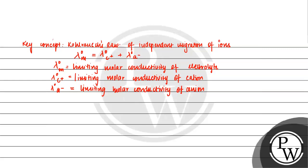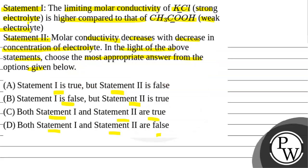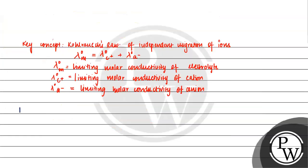That is how we represent Kohlrausch's law of independent migration of ions. Now, if we talk about the question, we have two electrolytes in Statement 1: KCl and CH3COOH. The ions involved are K⁺ and Cl⁻ for KCl, and H⁺ and CH3COO⁻ for CH3COOH. Their limiting molar conductivity values in S cm² per mole are: H⁺ = 349.8, K⁺ = 73.5, Cl⁻ = 76.3, and CH3COO⁻ = 40.9.